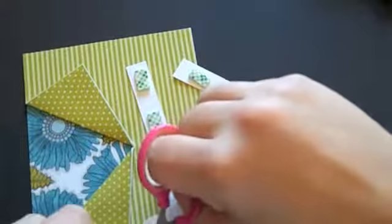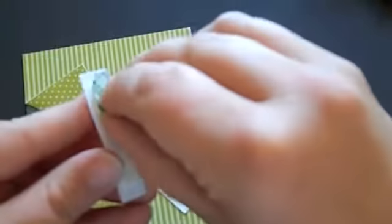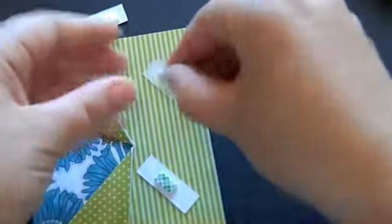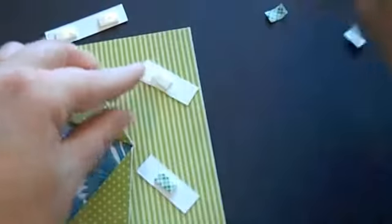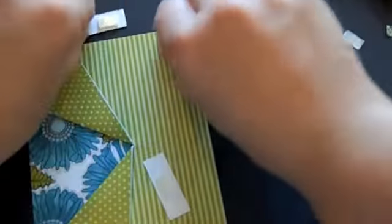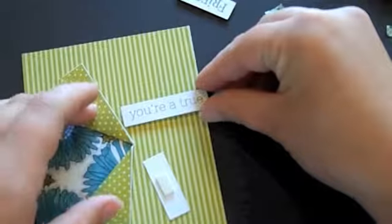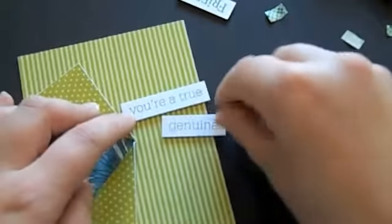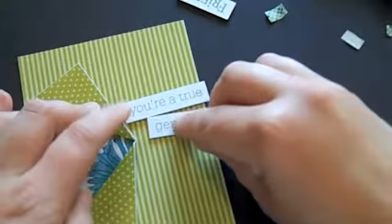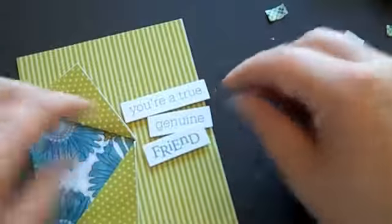I've got some foam tape here and I'm going to position this sentiment according to the sketch. Like I showed a minute ago, the sentiment in the sketch I got from this graphic has a sentiment right over here. So I've got my three pieces. I'm going to start with You're True, followed by Genuine, and lastly, Friend.